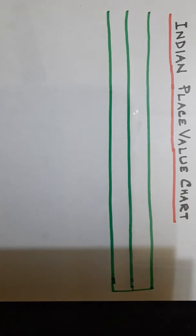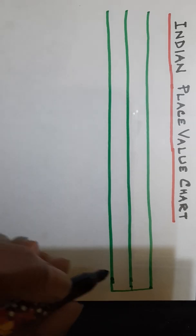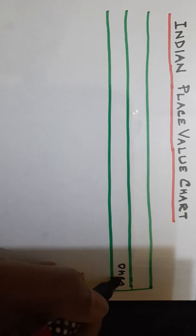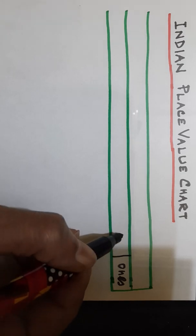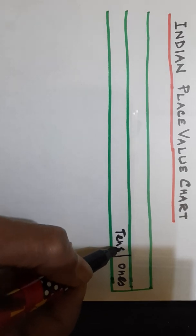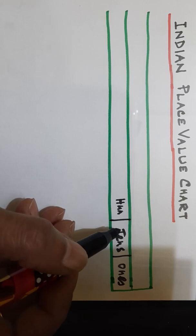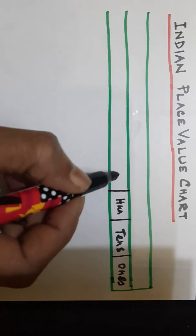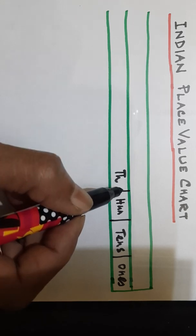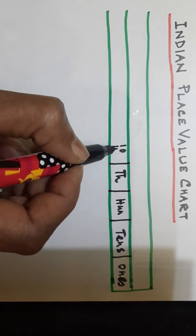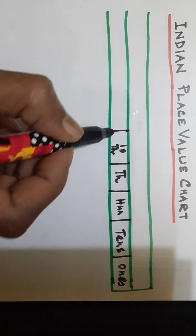From the right side we have to start. The first place of the place value chart is ones, next place is tens, then hundreds, then thousands, then ten thousands, then lakhs.